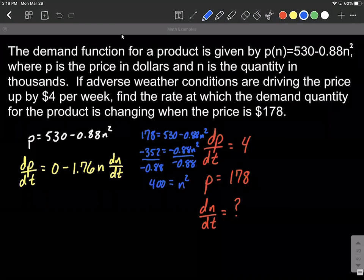We'll apply a square root to both sides. And this will give a positive 20 for our number of units. It wouldn't make sense in this context to have a negative number of units.